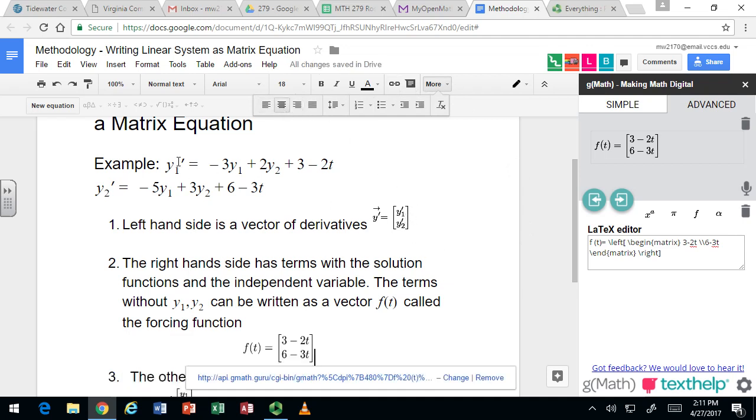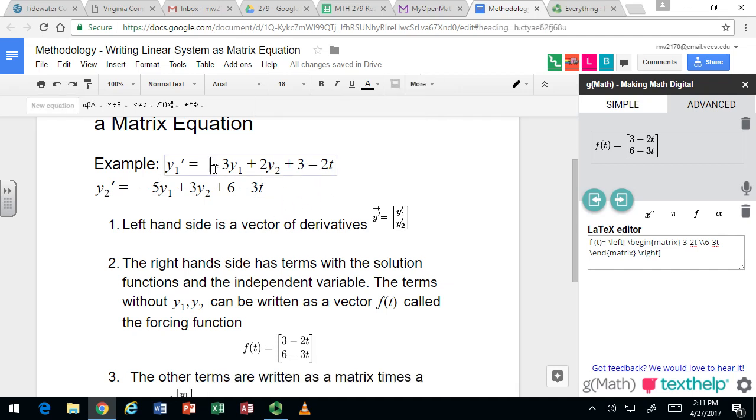Alright, so we've got a vector for the left-hand side, y prime, and we've got a vector for the right-hand side forcing function. Now just look at the other terms that have y1 and y2. And we want to think about those as being a matrix times the solution vector y. So we're going to write this out, and then we can verify that it does, in fact, give us those terms.